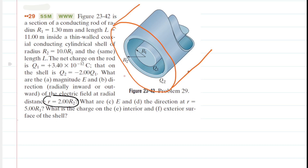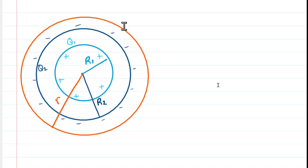The electric field is going to be located on the surface of our Gaussian cylinder. Right now, we don't know what direction the electric field is pointing — it may be pointing away from the structure or inward towards the structure. Looking end-on at the structure: the orange is the Gaussian surface, the darker blue is the cylindrical shell, and the lighter blue is the cylindrical rod.